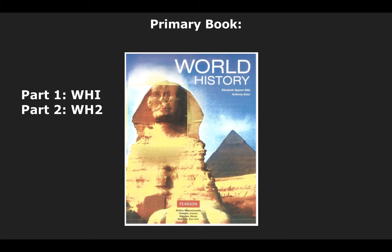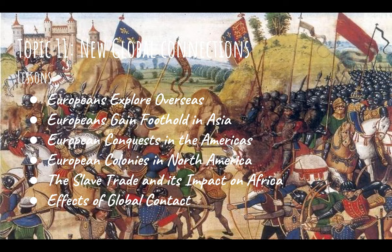The books to be covered are part one — World History One, covered in previous years — and part two, World History Two. The first unit in World History Two is called New Global Connections, Topic 11. The lessons are: Europeans Explore Overseas, Europeans Gain Foothold in Asia, European Conquests in the Americas, European Colonies in North America, the Slave Trade and Its Impact on Africa, and Effects of Global Contact.